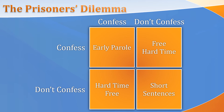If both of you confess, you'll get early parole. If one of you confesses and the other doesn't, the person who confesses gets hard time while the person who didn't confess is set free. If you both don't confess, you'll get short sentences. Your best possible outcome is not to confess, because then you could be set free — but if you confess, you could get hard time. However, if you both confess, the second best outcome is early parole. It really comes down to what you think you should do in light of whoever was arrested with you.